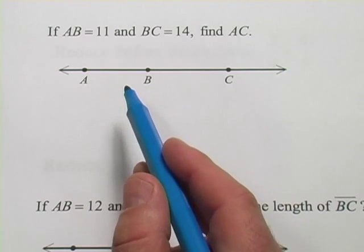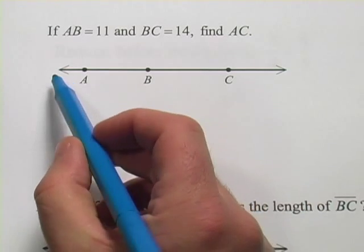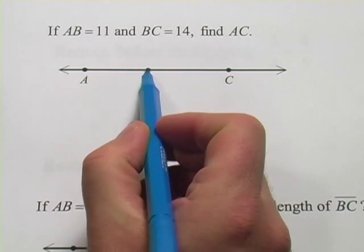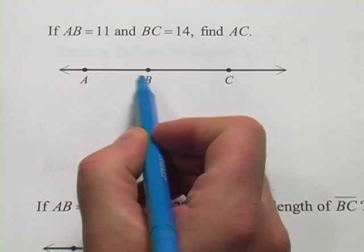In these problems, we're dealing with the lengths of line segments, and this thing with the arrows on either end is a line, and segments are the distances between two points.